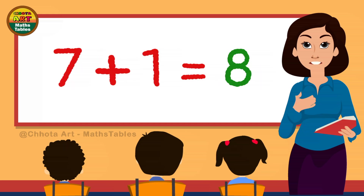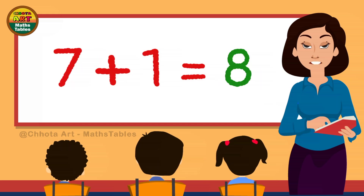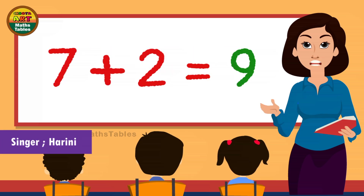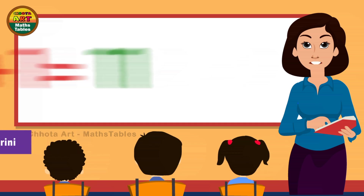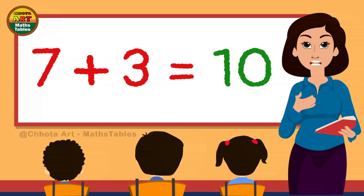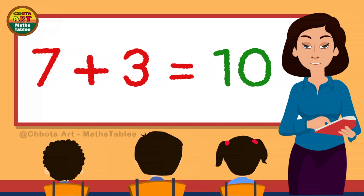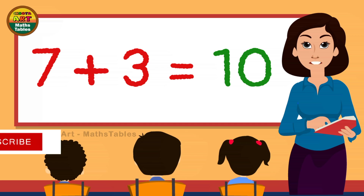7 plus 1 is 8. 7 plus 2 is 9. 7 plus 3 is 10.